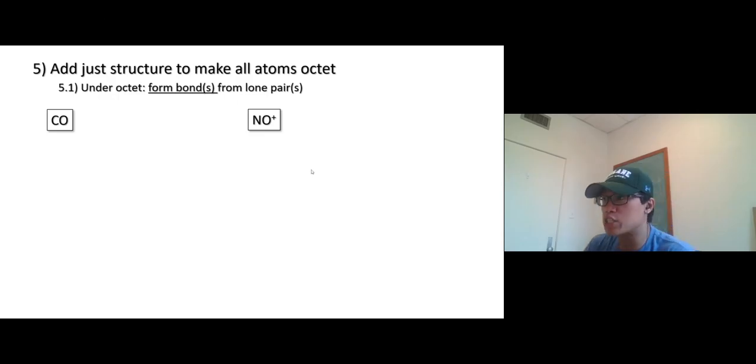Many times when you draw a Lewis structure, at the end you realize that an atom or maybe several atoms are not octet. So you have to adjust the structure to make everyone octet, make everyone happy.